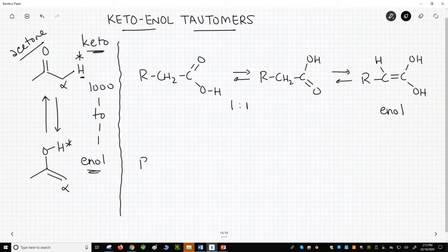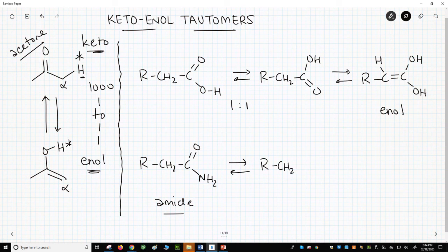Amides are another functional group that shows tautomerization. The predominant form is called the amide. The minor form is called an imidic acid.